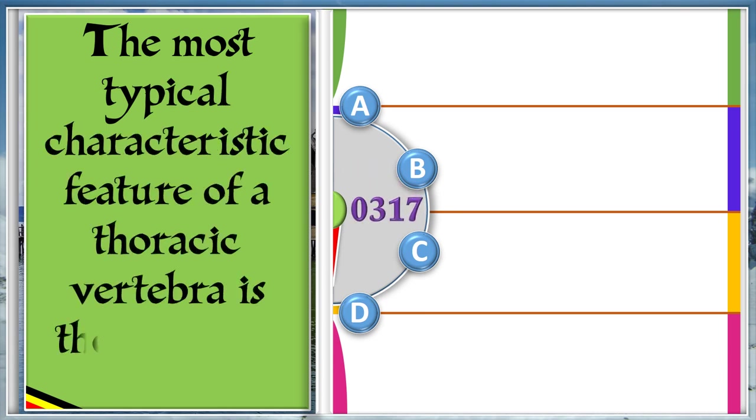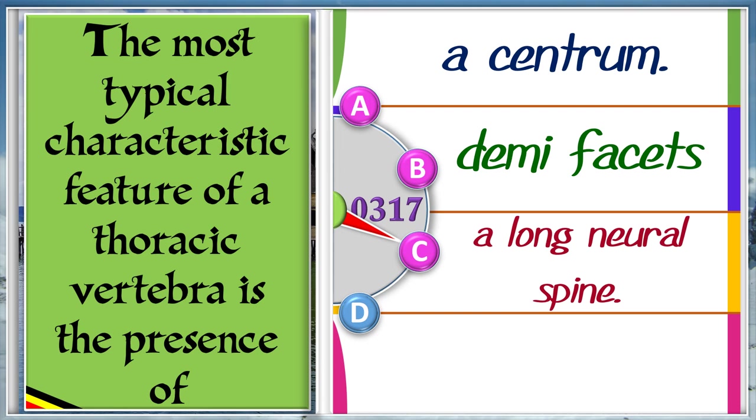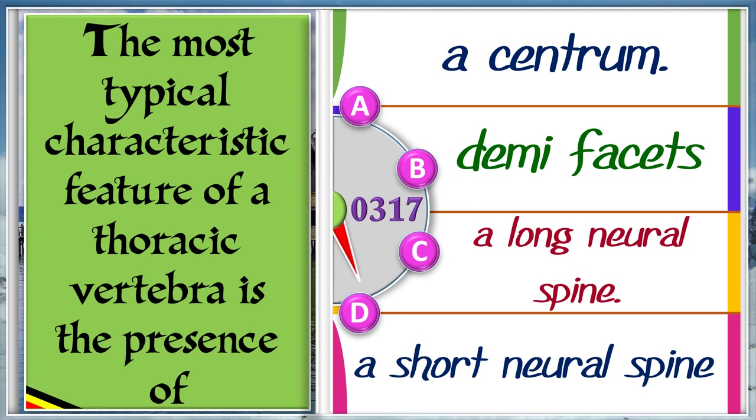The most typical characteristic feature of a thoracic vertebra is the presence of A: A centrum. B: Demifacets. C: A long neural spine. D: A short neural spine. And the answer is C, a long neural spine.